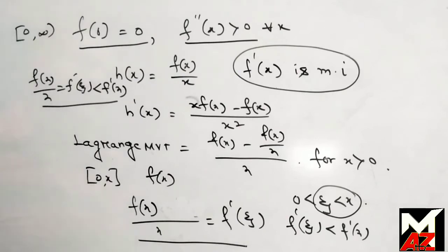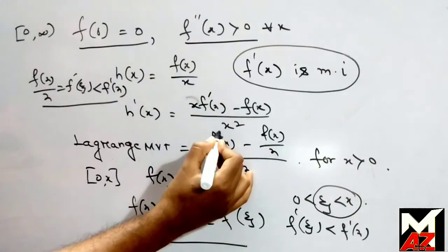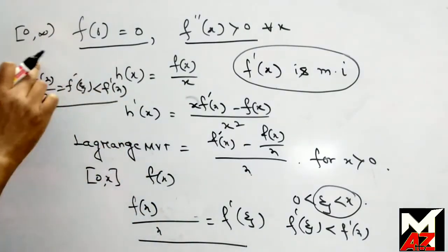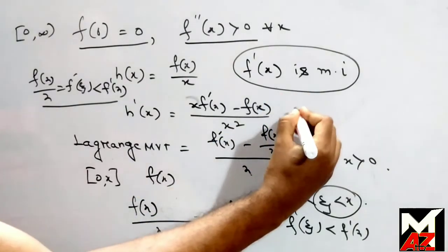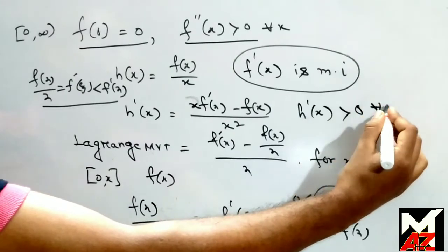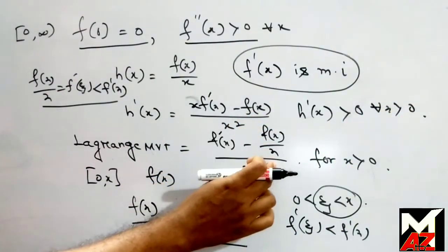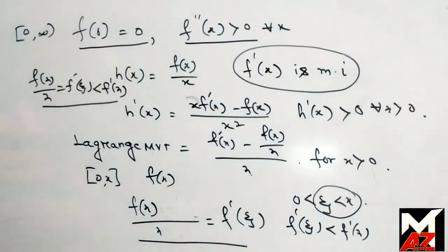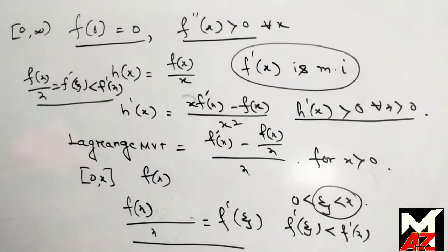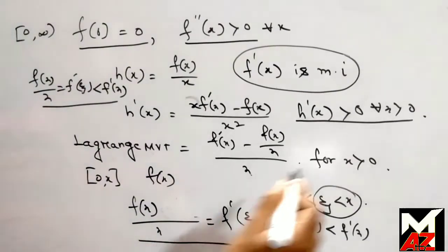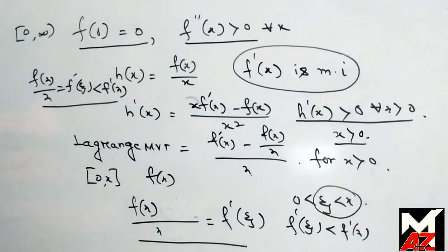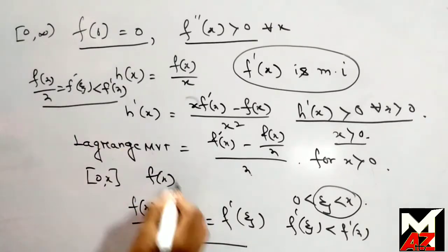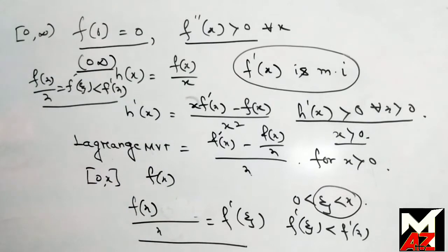So from this relation we can write h'(x) > 0 for all x > 0, because f'(x) − f(x)/x > 0 and x is also greater than 0. From this condition, we say that h(x) must be strictly monotonically increasing for x > 0. So the option 1, that is, increasing on (0, ∞), is correct.